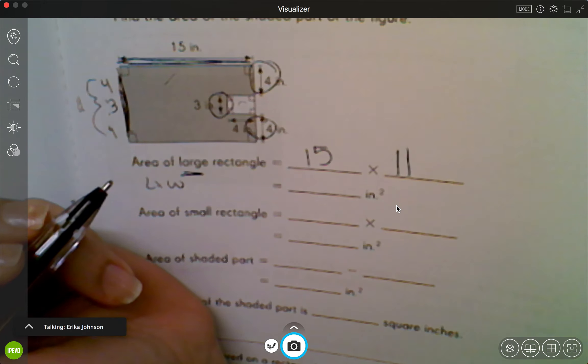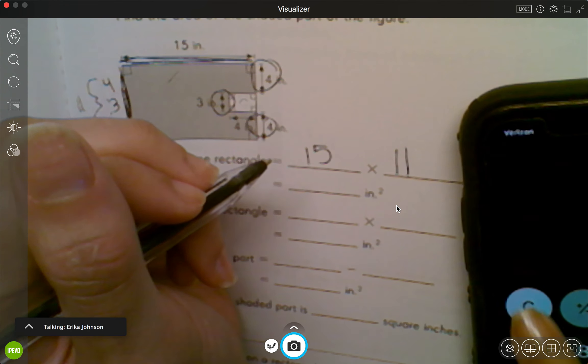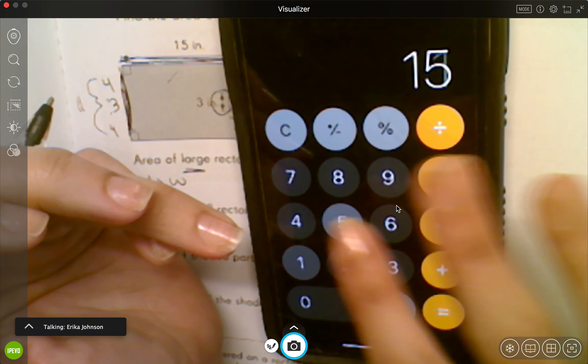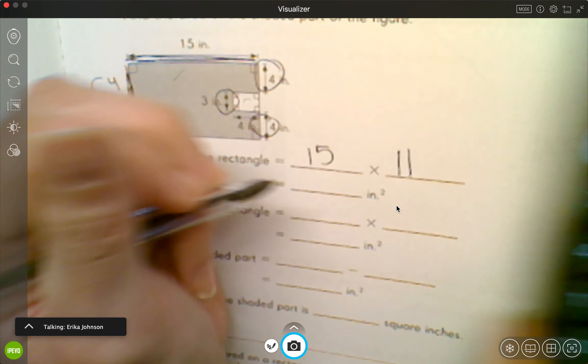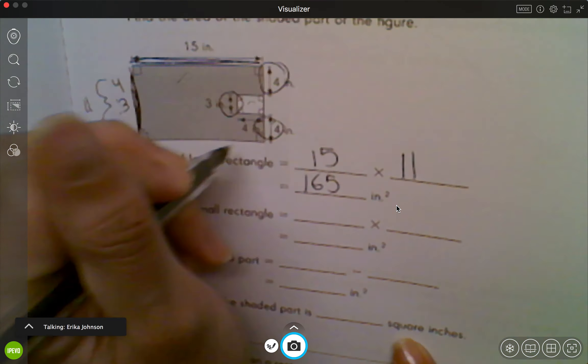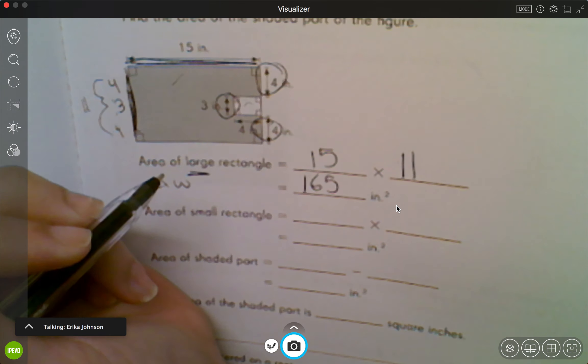So what I'm gonna do first is I'm gonna do 15 times 11. 15 times... oops, I did minus. 15 times 11, and that gets me 165. So now I know the area of the whole thing is 165.